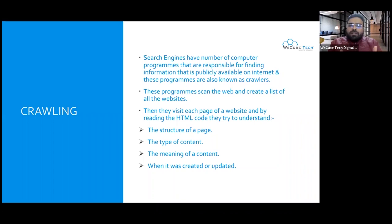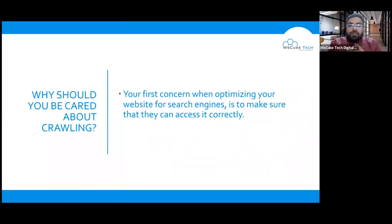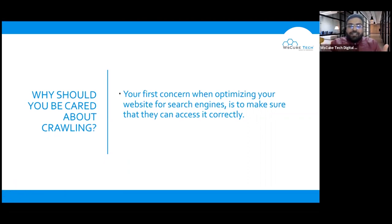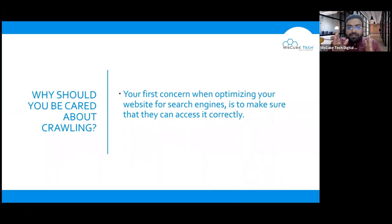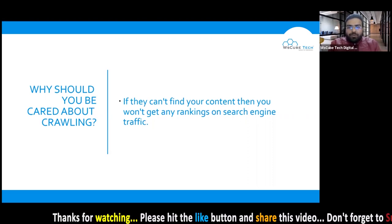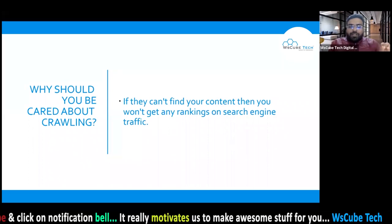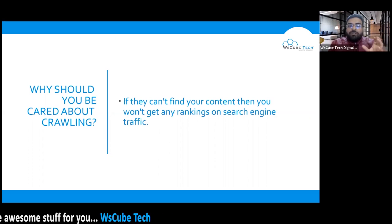This is one way to understand the search engine. The first important concern about our website is whether Google can access it properly. How does Google access it? Through crawling. This is why crawling is the first important part of search engine working. We will optimize the elements so that Google can crawl properly. We will cover this in technical SEO — how to make it crawlable and optimized.